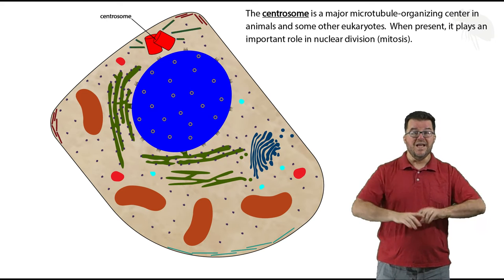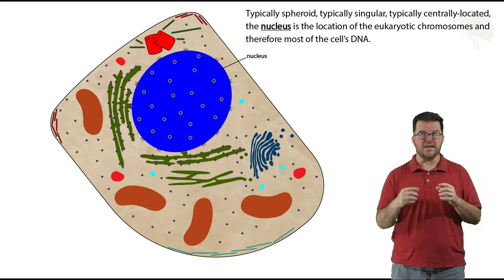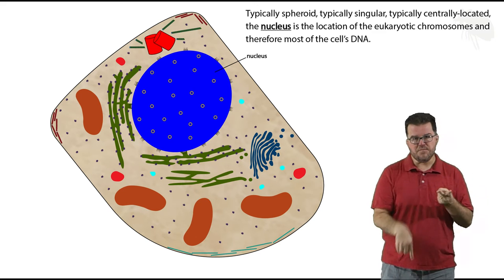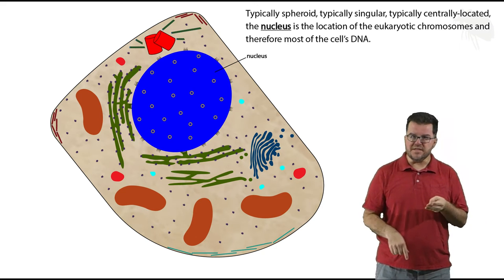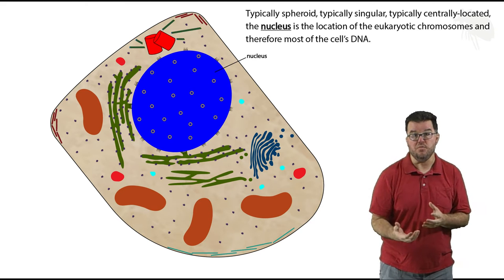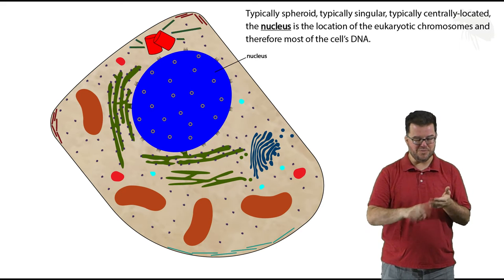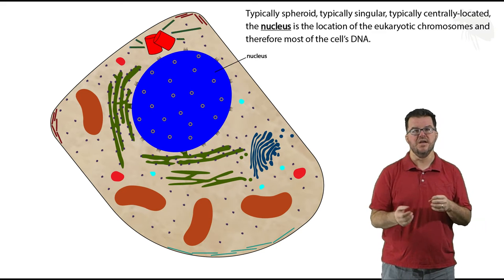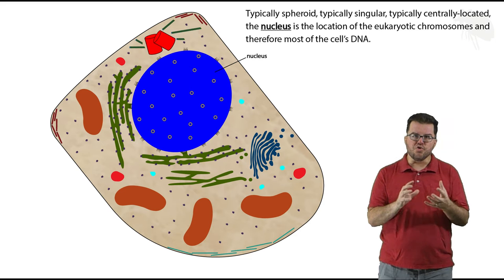Now the nucleus is that typically large, typically singular, typically centrally located membranous structure that contains the chromosomes. Keep in mind all those words 'typically' means there are exceptions. Think of the nucleus as central control for the cell because it contains the chromosomes.